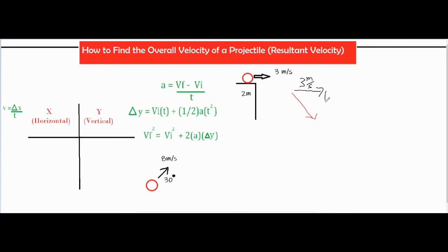We also have a vertical velocity, which we'll call vfy. After connecting those vectors tip to tail, we get one overall final velocity vf. To find vf, we first need to find vfy, and to do that we need three known variables in the y column, because the kinematic formulas require three knowns.